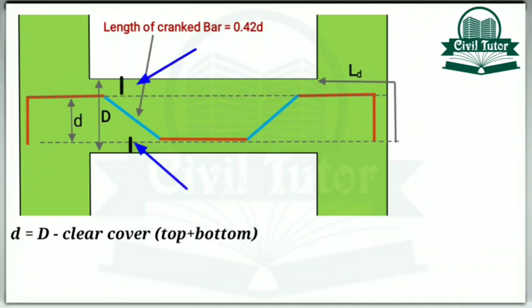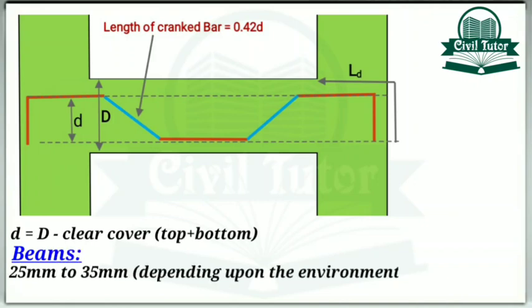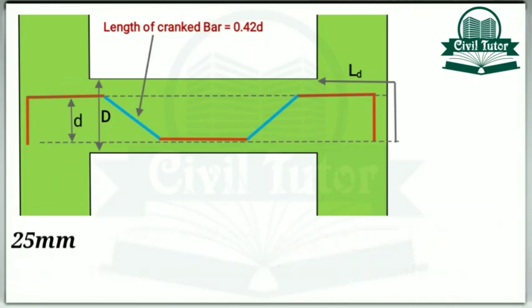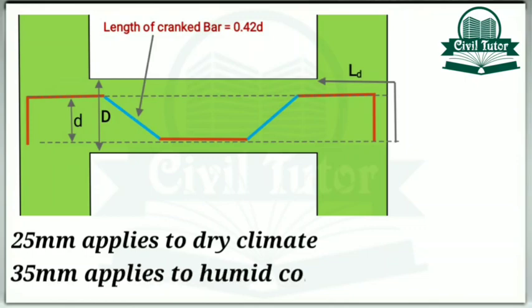The minimum clear cover for beams should be 25 mm as per IS456-2000. So for beams the clear cover ranges from 25 mm to 35 mm depending upon the environmental conditions present during the structures service life. The 25 mm applied to a dry climate and the 35 mm to humid conditions.